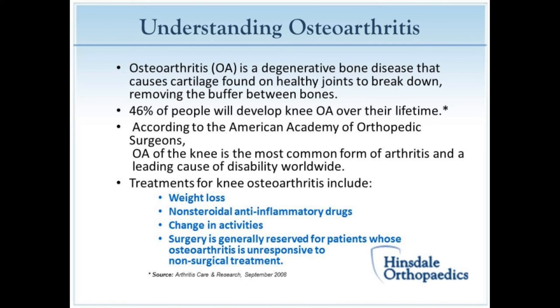About 46% of people will develop arthritis in their knee in their lifetime. The knee is the biggest joint in the body, subject to significant stress through the course of our lives. It's estimated that about 10% of these people will develop what we call unicompartmental arthritis — meaning pain in just one part of the knee. We divide the knee into three compartments: the medial side, or inside part of your knee; the lateral compartment, which is the outside; and the patellofemoral joint, which is underneath the kneecap.